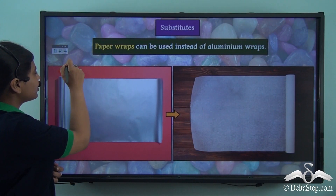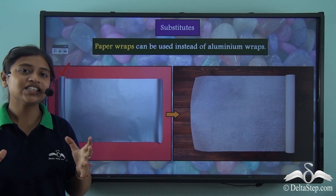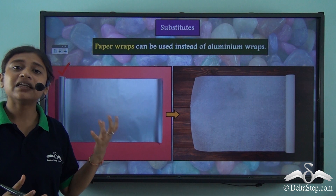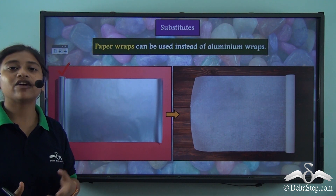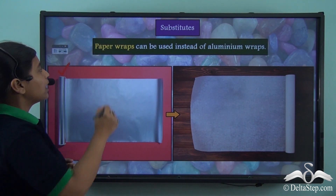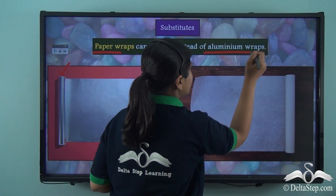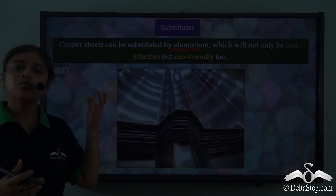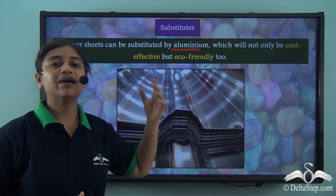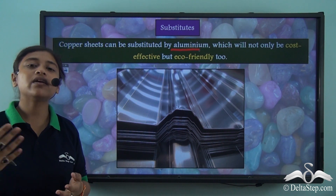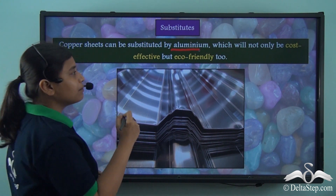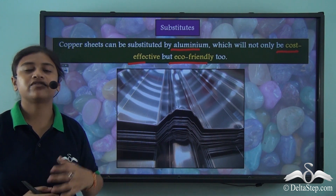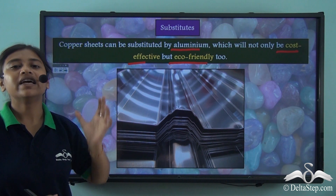Aluminium foil is commonly used to wrap food and keep it warm, but aluminium is an inorganic mineral that takes millions of years to form and cannot be obtained easily. A better alternative to aluminium foil is paper wraps. Additionally, copper sheets can be substituted by aluminium — although both are minerals, aluminium is more cost-effective and can be recycled for more times compared to copper, making it both cost-effective and eco-friendly.